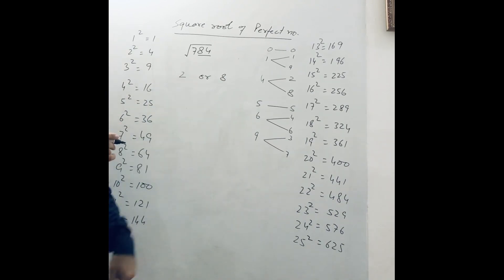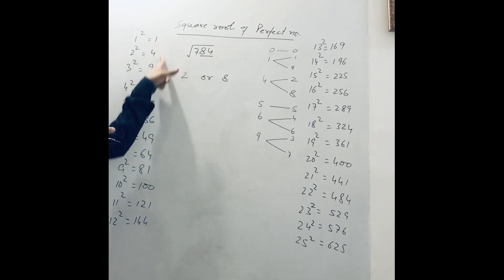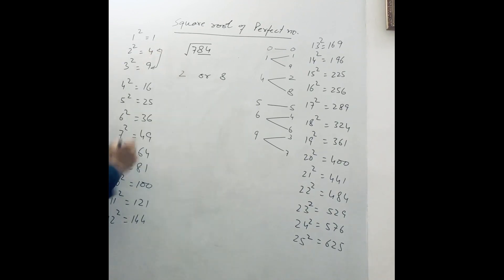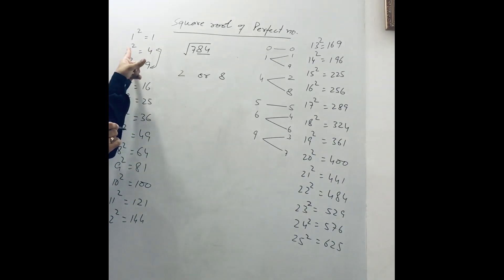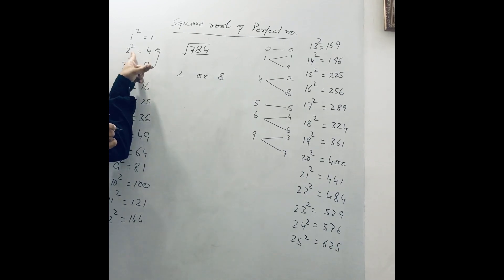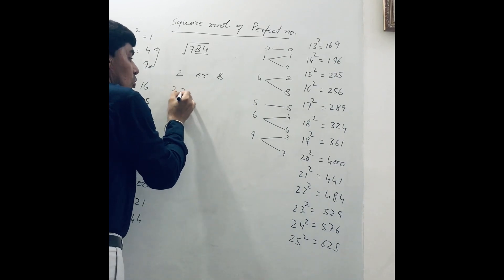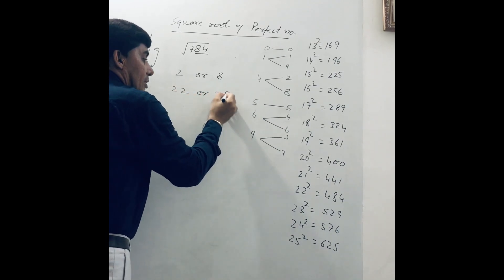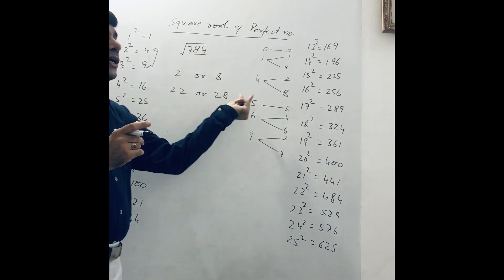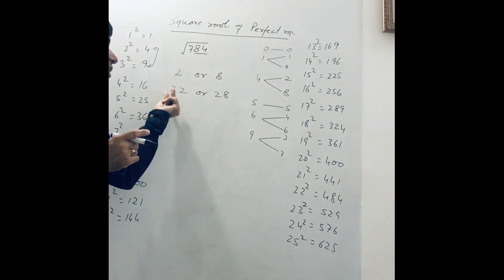In the next step, we see 7. Where does 7 lie in the table? 7 lies between 4 and 9, meaning between 2² and 3². The lowest value is 2². So we write 2, giving possibilities 22 or 28. The square root of 784 may be 22 or 28.